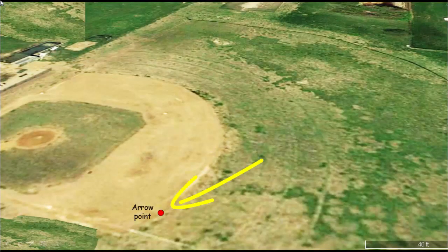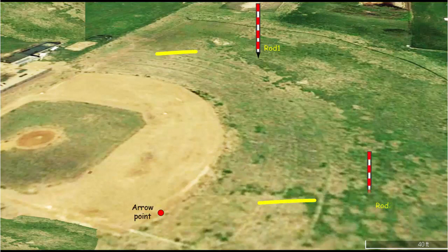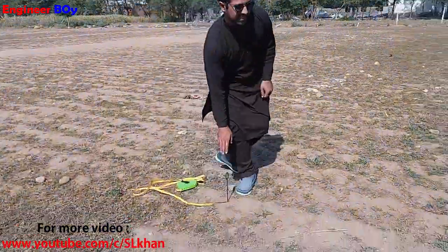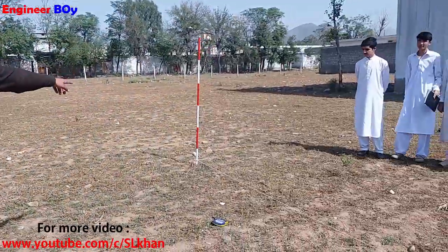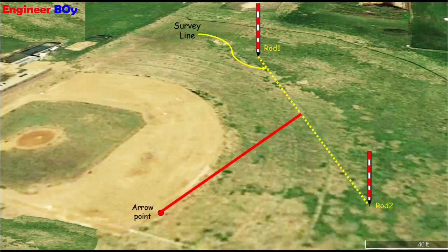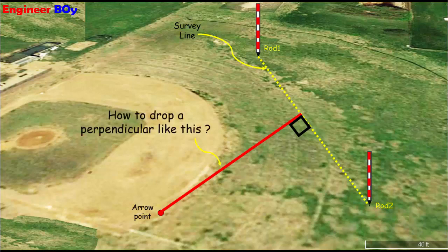Suppose if we have a point — an arrow represents a point little away from a survey line, and the segment between these two ranging rods represents a survey line, and we want to drop a perpendicular from that arrow point on the same survey line. So how can we do that?